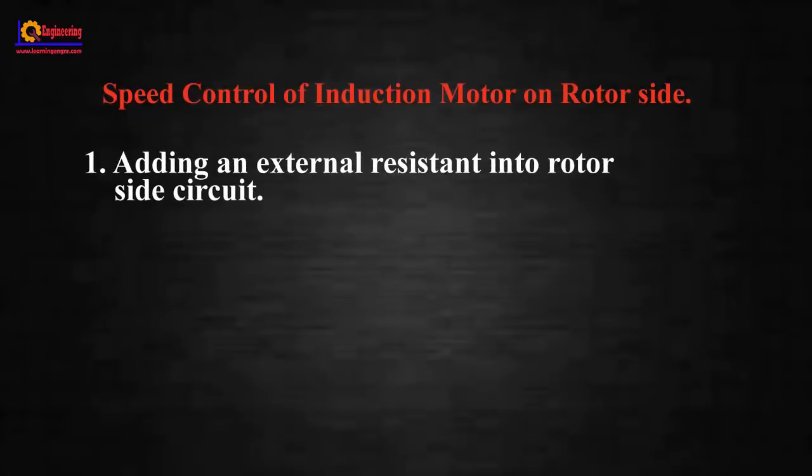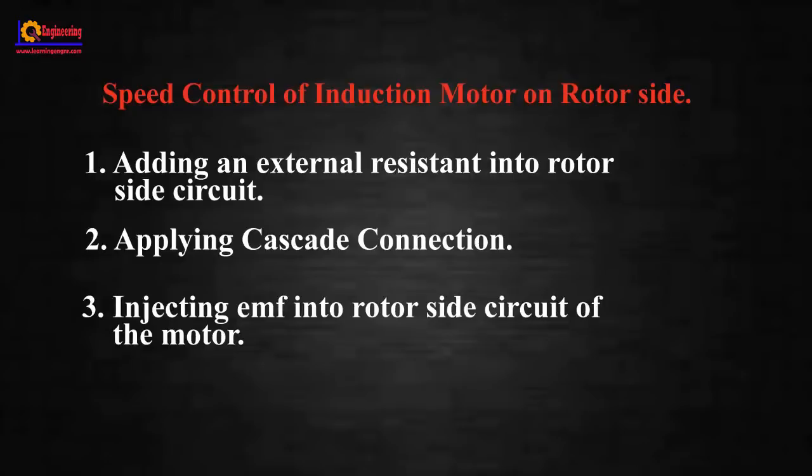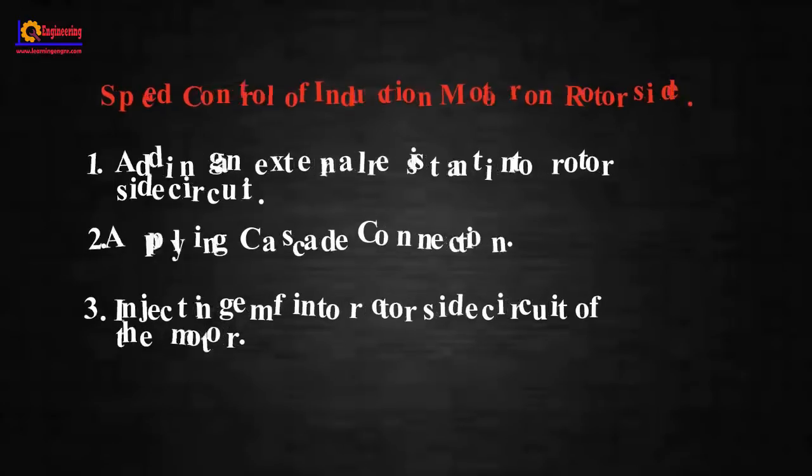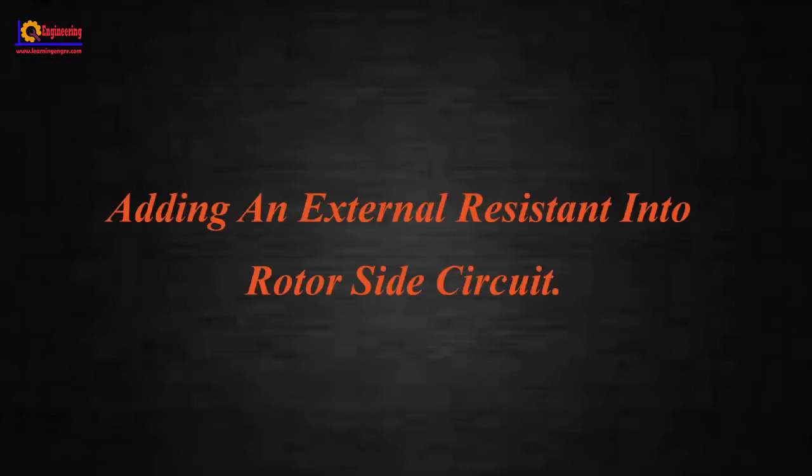The speed control of induction motor on rotor side can be subdivided into several methods such as adding an external resistance into rotor side circuit, applying cascade connection, and injecting EMF into rotor side circuit of the motor.